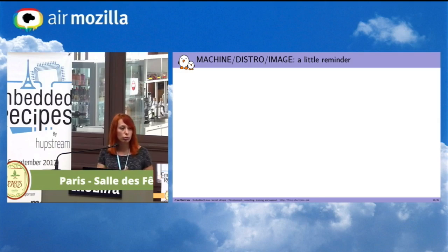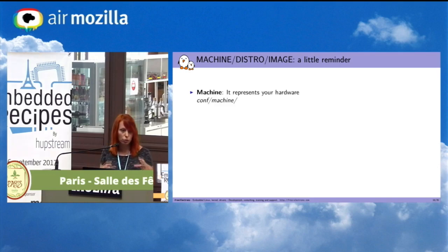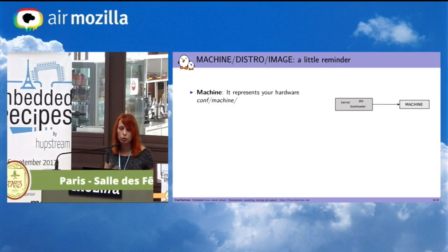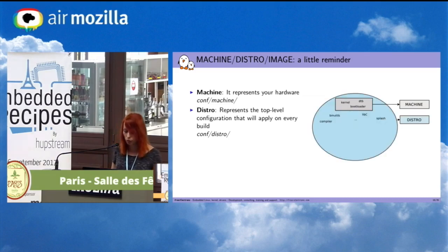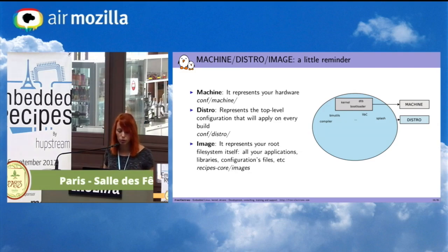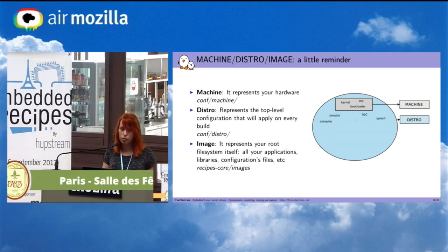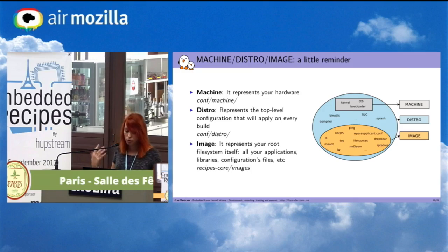To clarify the difference between machine, distro, and image: a machine represents your hardware — in the machine you choose which kernel, which device tree, and which bootloader you want. The distro represents the top-level configuration applied to every build — you indicate which compiler and which C library you want. The image represents your root filesystem itself: all the applications, libraries, and configuration files you want, such as mount, top, and which libraries.